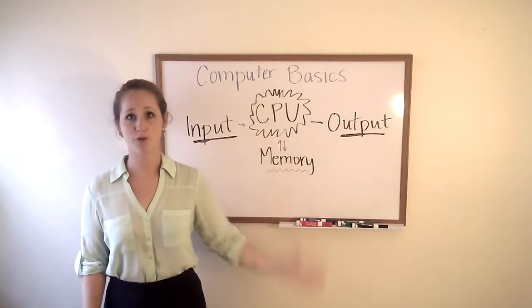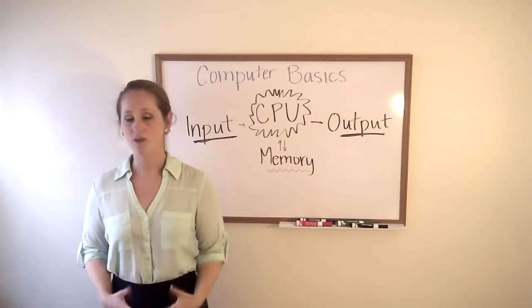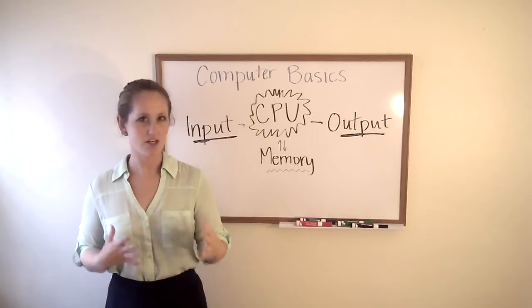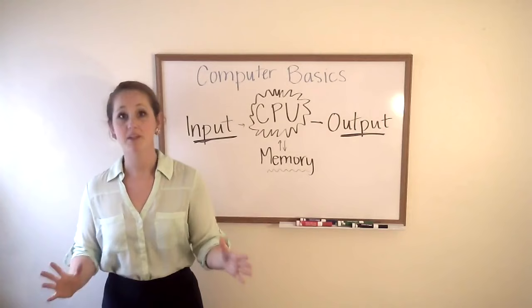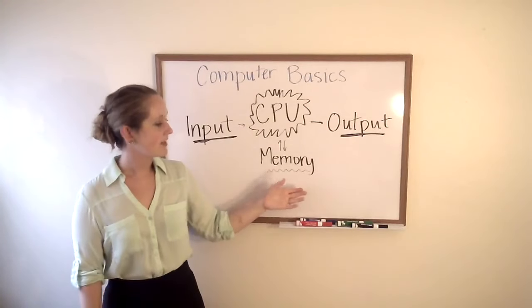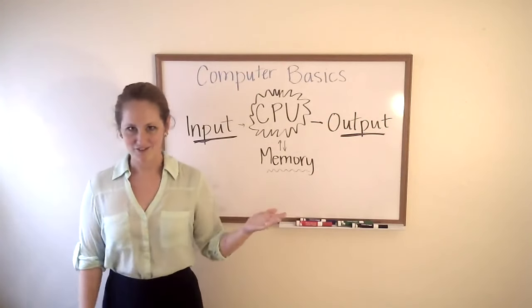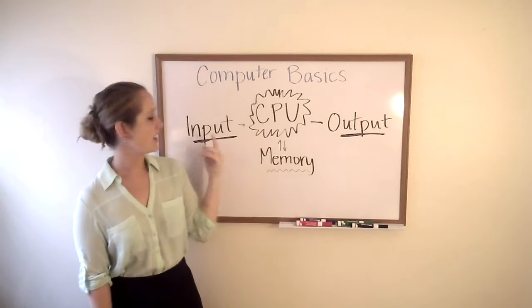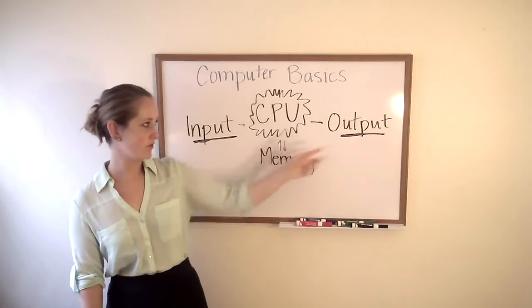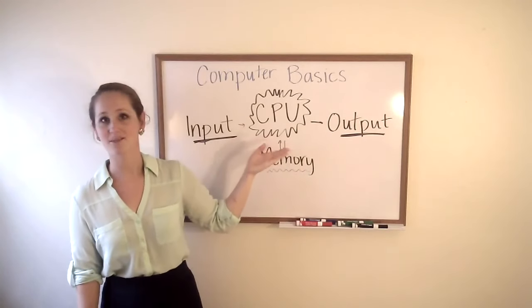The CPU stands for Central Processing Unit, and that's what we all think of when we think of a computer. It's what does the functions, it's what runs the software, it manipulates the data. The memory is where we store data and information. Now, the CPU has exclusive access to this memory. You can't get to the memory from the input or from the output without the use of the CPU.